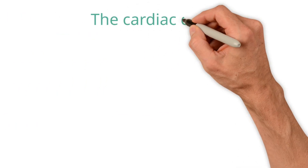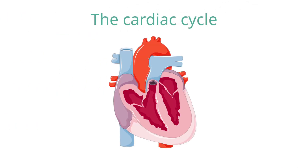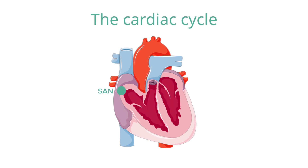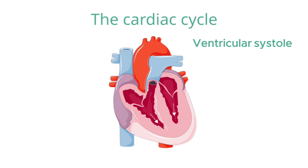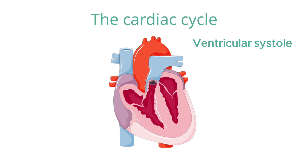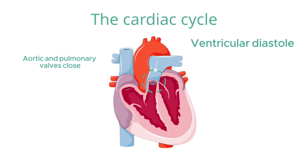To understand the sounds the heart makes when it beats, let's first consider the normal cardiac cycle. When an electrical impulse originating in the sino-atrial node reaches the ventricles, they contract, which starts ventricular systole. This causes the atrioventricular valves — the mitral and tricuspid — to rapidly slam closed to prevent blood flowing back into the atria. Almost simultaneously, the aortic and pulmonary valves open and blood is ejected forcefully into the aorta and pulmonary trunk. Towards the end of systole, the pressure produced by the ventricles decreases below that of the arteries, causing the aortic and pulmonary valves to slam shut to prevent backflow into the ventricles — marking the start of ventricular diastole.